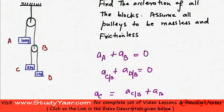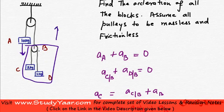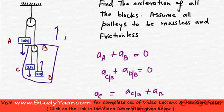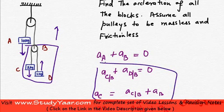Now let's make an assumption: this block is going down and this subsystem is going up. Within this subsystem, we assume this block is going down and this one is going up. There is a whole subsystem going up, and within that, these bodies are going in opposite directions. Hence we have these equations.